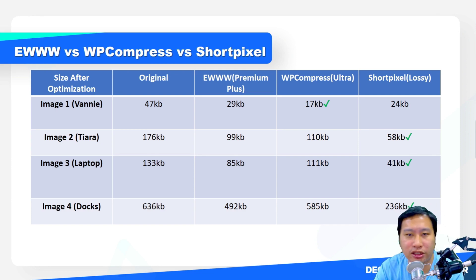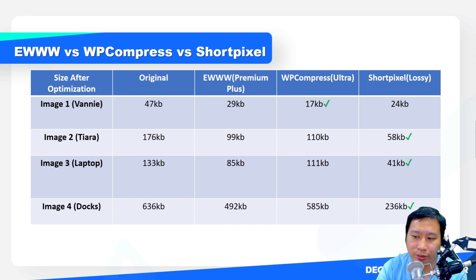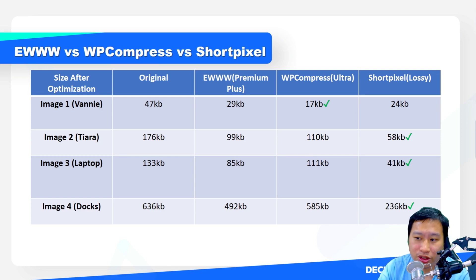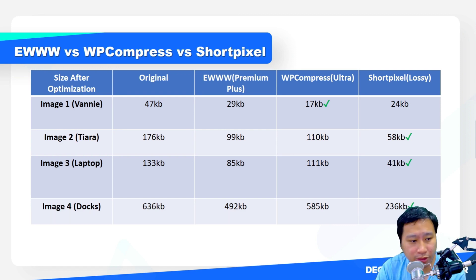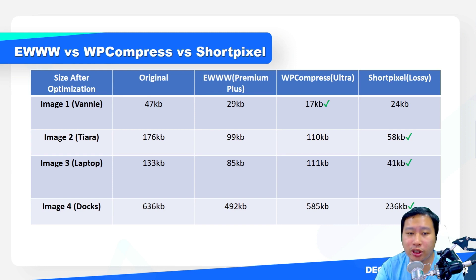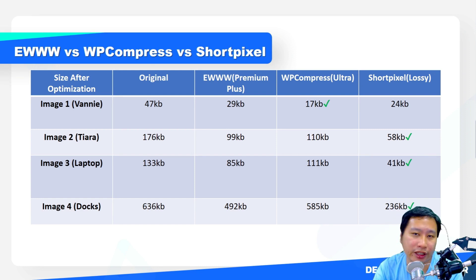The next image is a picture of a tiara — a product image. I wanted to include this for e-commerce stores because you don't want to over-optimize product images and have them look unclear, which could affect your conversion rate. The original image is 176 KB. Ewww brings it to 99 KB, WP Compress to 110 KB, and Short Pixel is the winner here at about 58 KB savings.